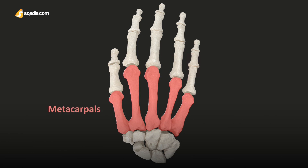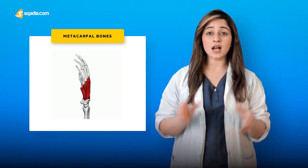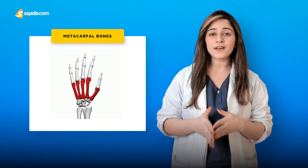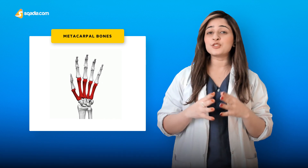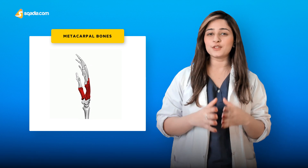The metacarpals are a group of five bones in the hand that lie between the phalanges of the fingers and the carpal bones of the wrist. They form the intermediate part of the hand that connects to the forearm. The metacarpal bones are small, yet they are classified as long bones because they have the structural characteristics of long bones.